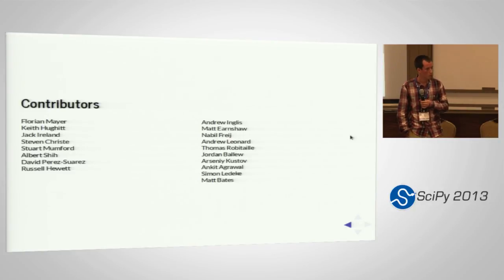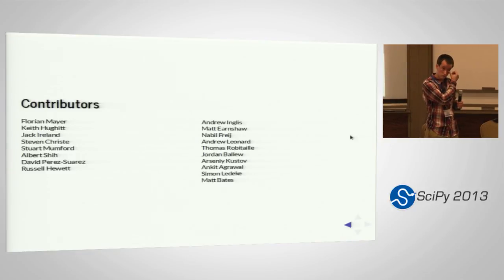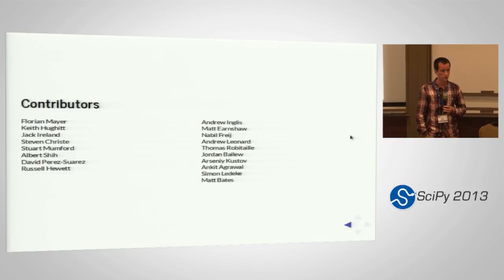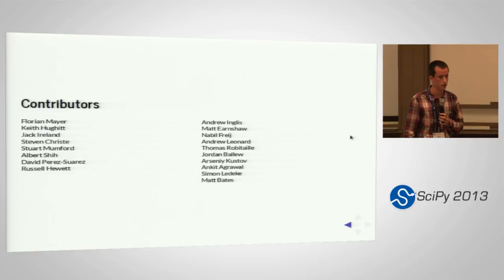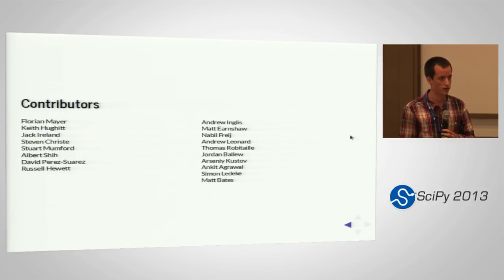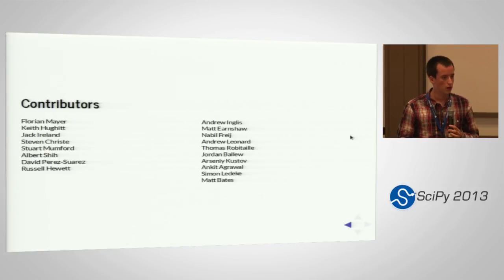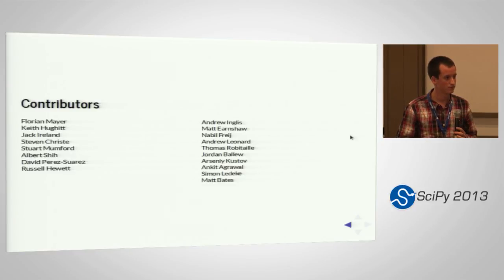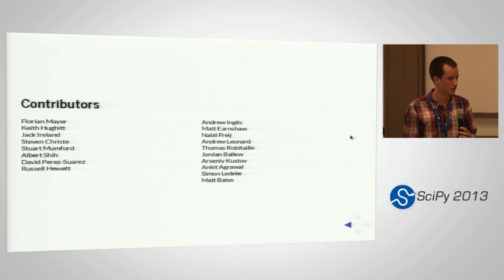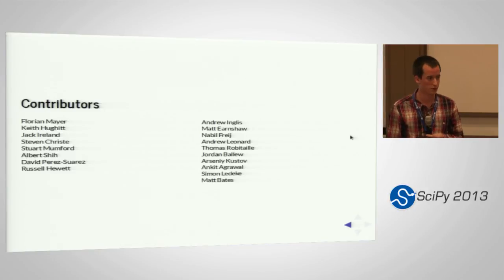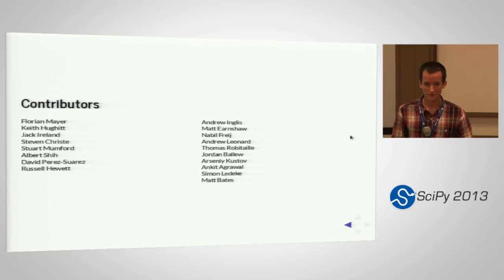The question is whether we have tools for accessing the LMSAL feature database — a database of identified features. HEK is kind of what that is; it might be the same thing. HEK runs automated detection algorithms on SDO data and catalogs things it sees. There are other catalogs as well. As for near real-time access — for example, if you hear there's been an X-class flare on the Sun and want to know where on the Sun it was to get a picture — maybe not at the moment, but there is a service that does that. That might be something to work on given a spare ten minutes.